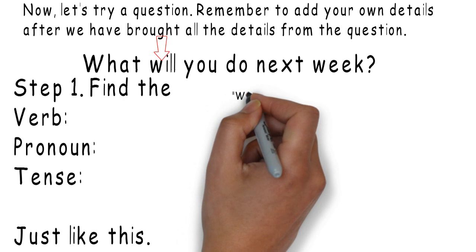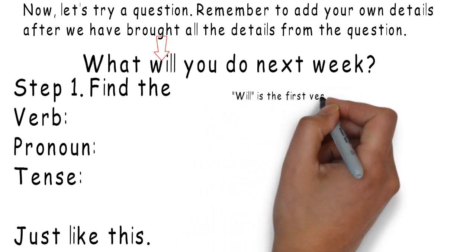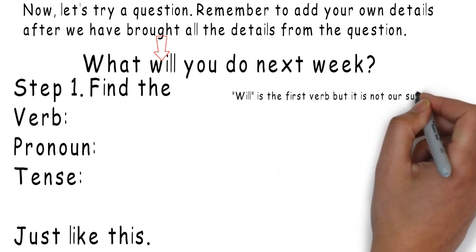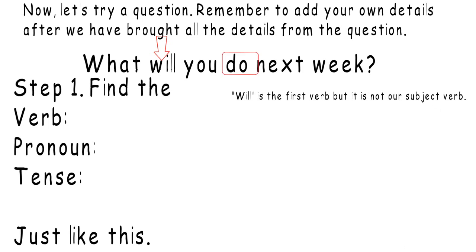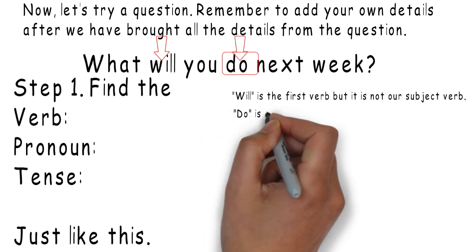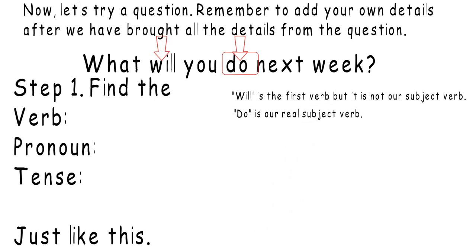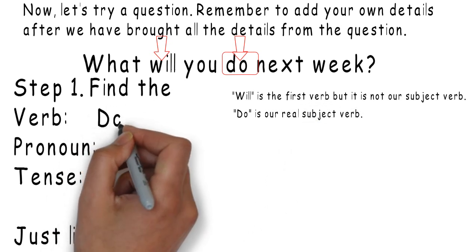Will. Will is the first verb in this and is not our subject verb. Do. Do is our real subject verb. So, our verb is do.